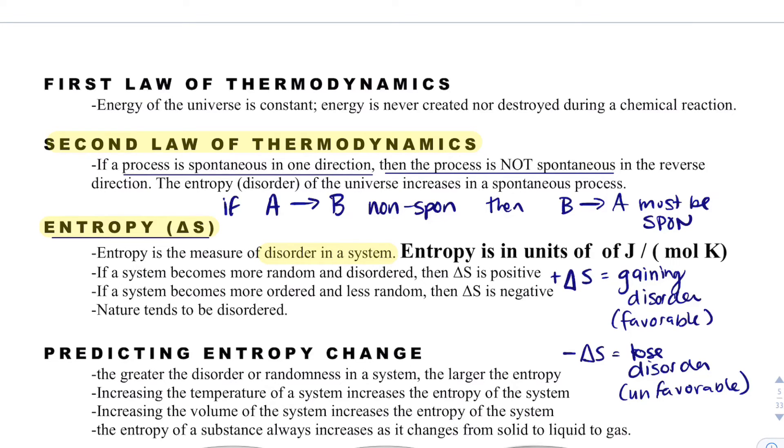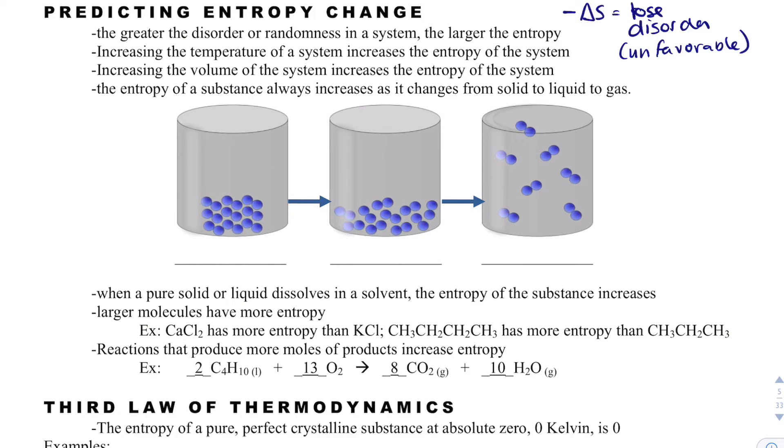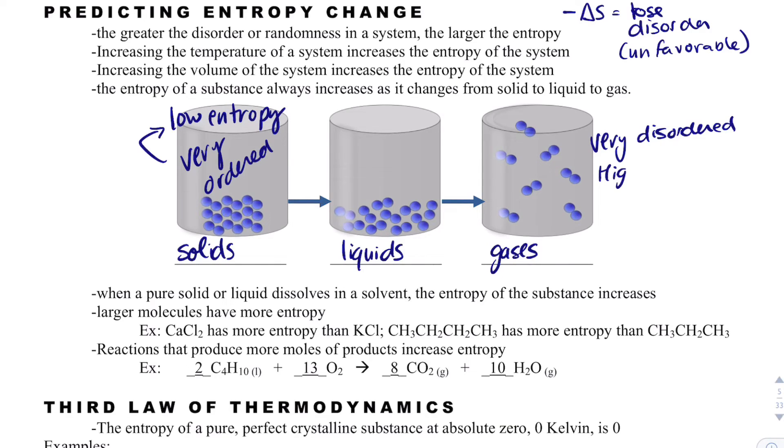In notes two or three we're going to relate entropy and delta H so we can look at processes and know their entropy. We have solids, liquids, and gases. Gases are very disordered - they're bouncing around off walls and into each other all the time - where solids are very ordered. If something's very ordered, that means we have low entropy. If we're very disordered, that would be high entropy. Solids have very low entropy and gases have very high entropy.